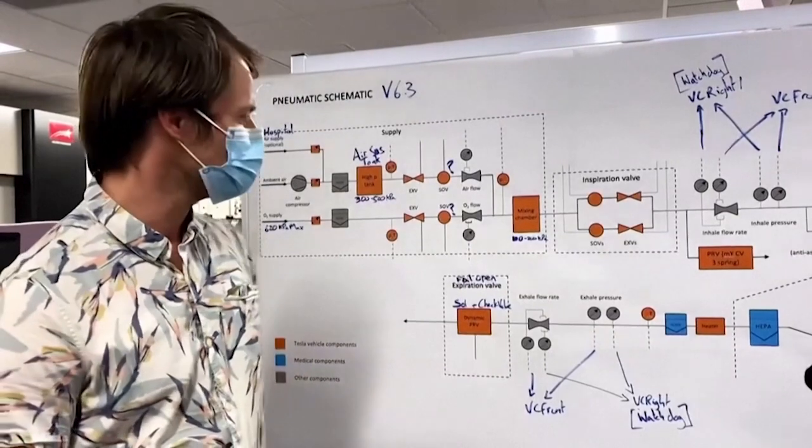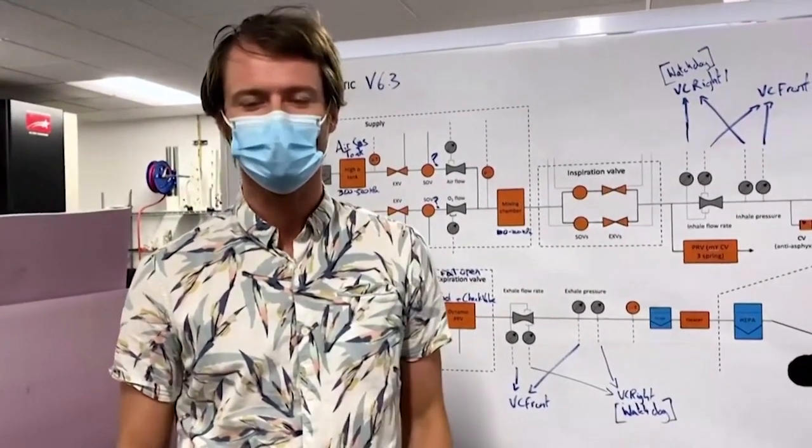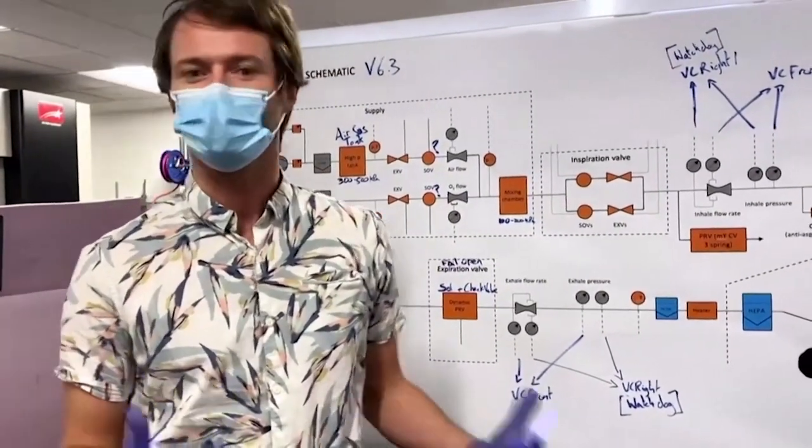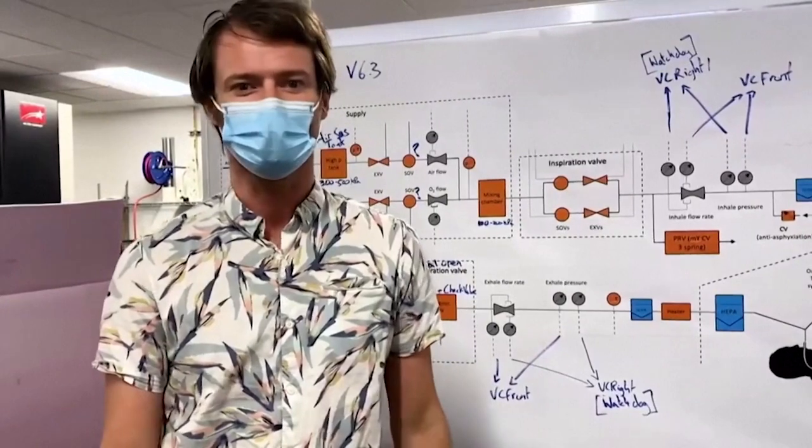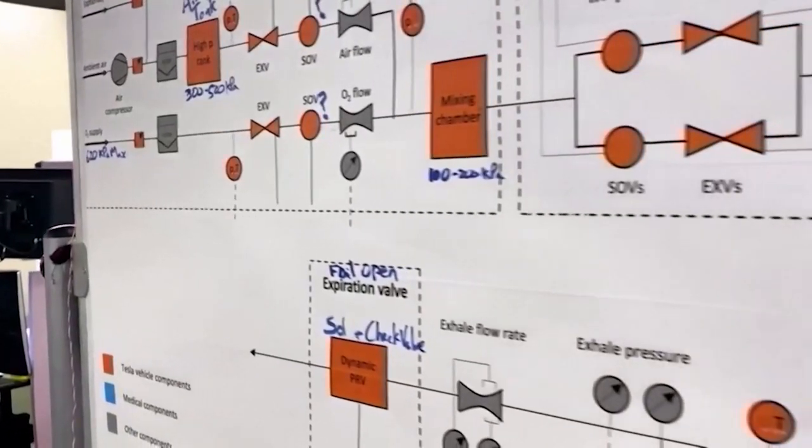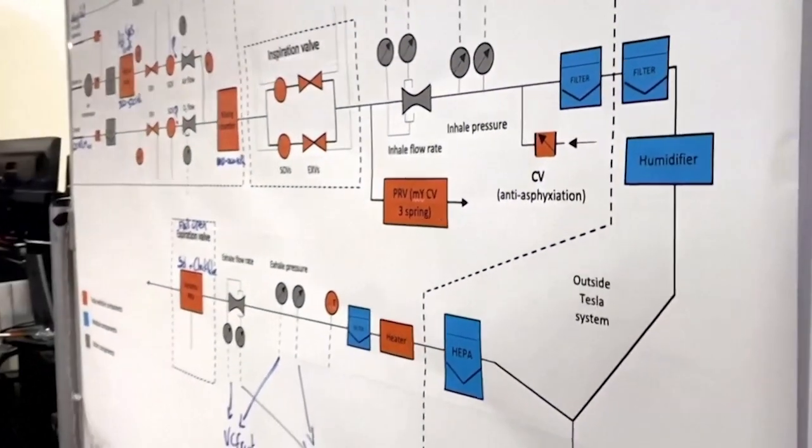We've been working on developing our own ventilator designs, specifically one that's heavily based on Tesla car parts. We want to use parts that we know really well and that we can develop really fast in the available environment. So here's our high-level system design. You can see that all the red dots here are a type of vehicle parts that we've used.